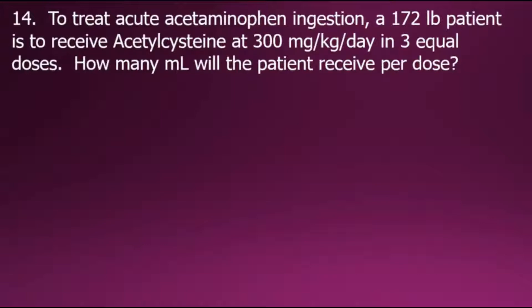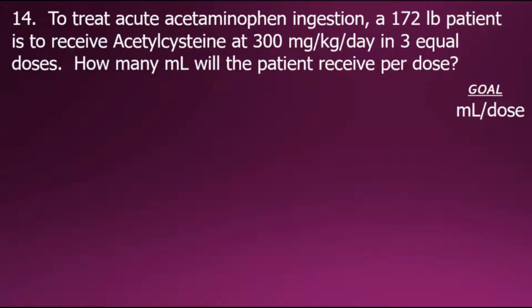In this dosage calculation problem, it states: to treat acute acetaminophen ingestion, a 172-pound patient is to receive acetylcysteine at 300 milligrams per kilogram per day in three equal doses. How many milliliters will the patient receive per dose? To answer the question, our answer will need to be in milliliters per dose — we'll set that as the goal.